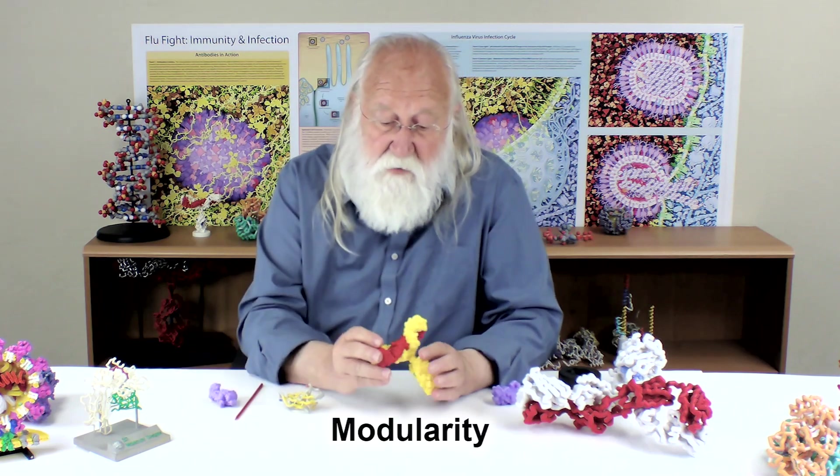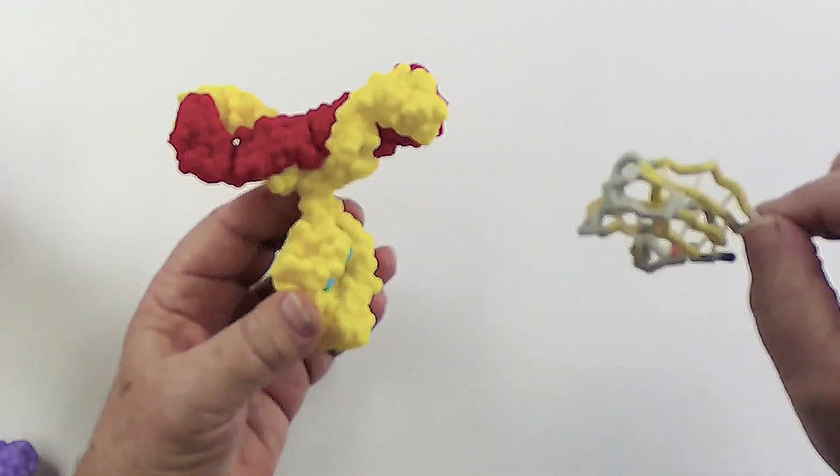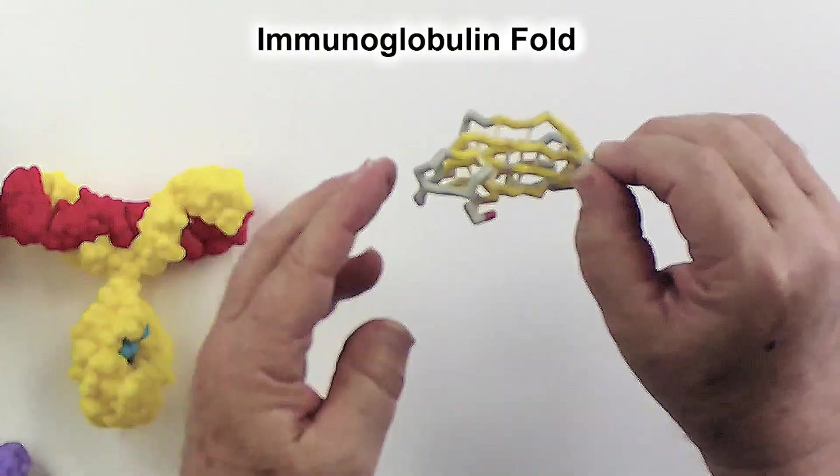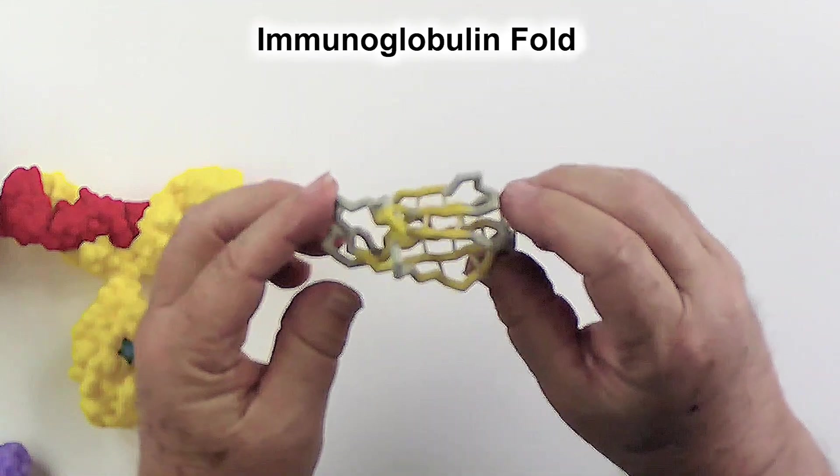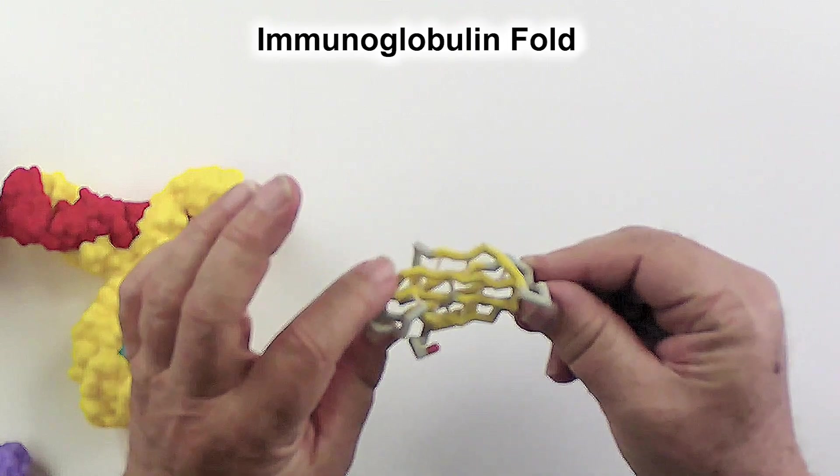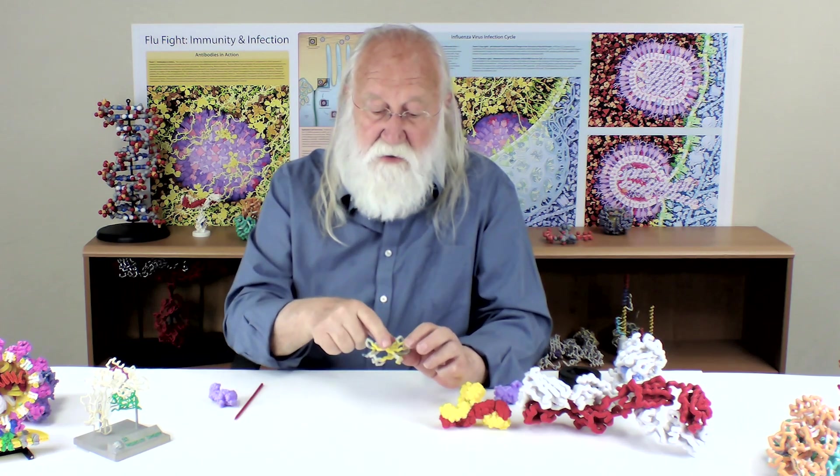The other remarkable thing about the protein structure of an antibody is its modularity. And what I mean by that is this whole protein is made up of a series of what we refer to as the immunoglobulin fold. And I have here a little backbone model of an immunoglobulin fold. You've probably heard when you learned about protein secondary structure, you learned about alpha helices and beta sheets.